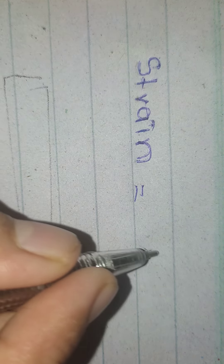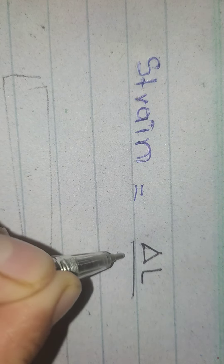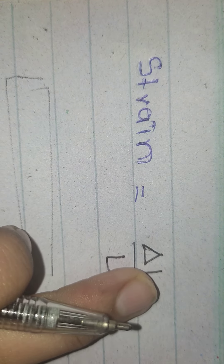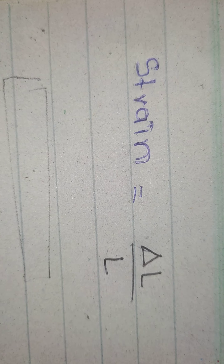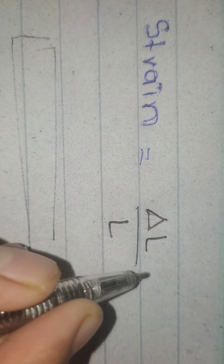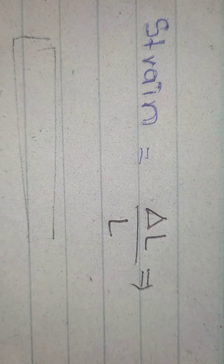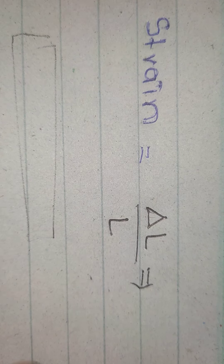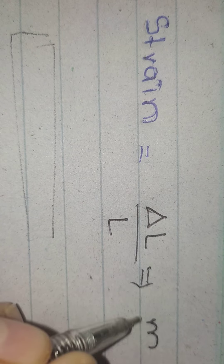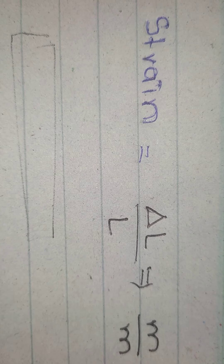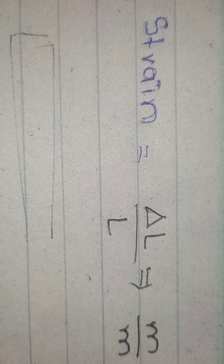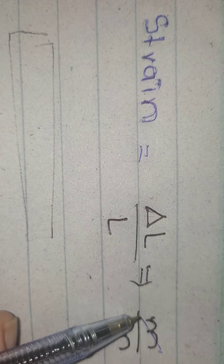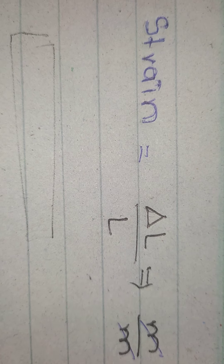If I tell you the formula — the mathematical formula — strain equals delta L over L. This is the formula. You will know that we show length in meters. So delta L and L — this means the numerator is in meters and the denominator is also in meters.